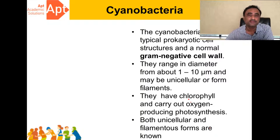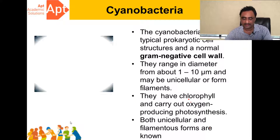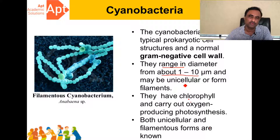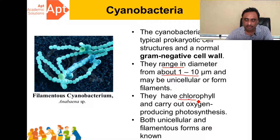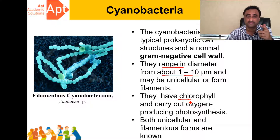Cyanobacteria is a typical prokaryotic cell, and they are gram-negative bacteria. They range in diameter from about 1 to 10 micrometers. They may be unicellular or multicellular. They have chlorophyll and carry out photosynthesis — most importantly, oxygenic photosynthesis.